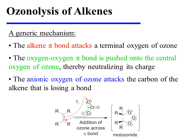In the first step of ozonolysis, ozone adds across the alkene pi bond, and this is described using three mechanistic arrows. The alkene pi bond attacks a terminal oxygen of ozone, and this displaces the oxygen-oxygen pi bond onto the central oxygen of ozone, thereby neutralizing its charge.